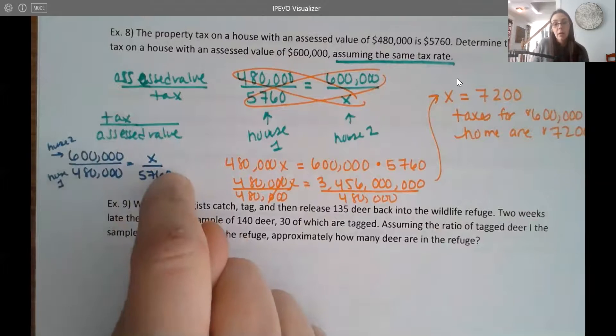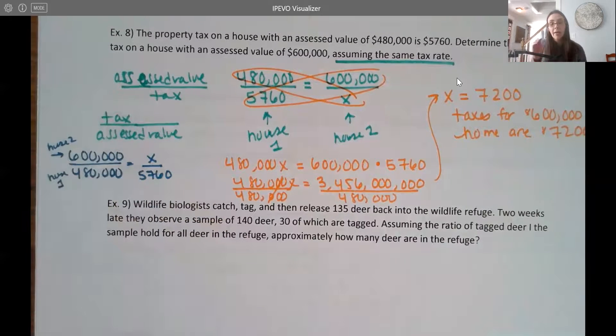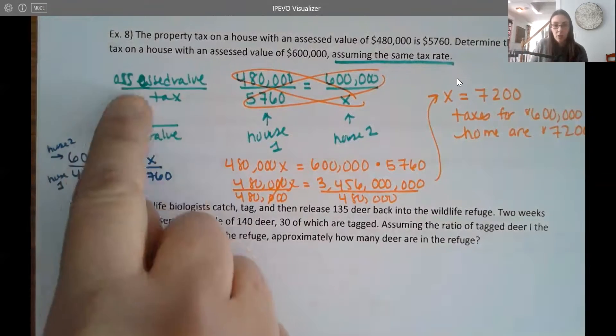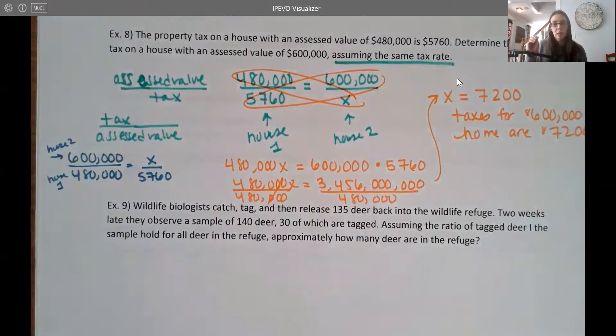So it's another way you could do it too, is you have comparing value to value, tax to tax, but making sure you're consistent. House two, house two, house one, house one. So with proportions, you have a lot of wiggle room of how you set them up, as long as you are consistent. So again, I do recommend just writing your units out off to the side so that you plug everything in in the right spots.